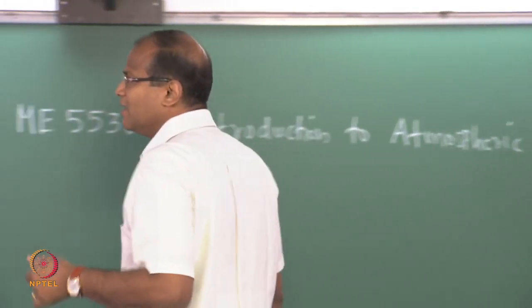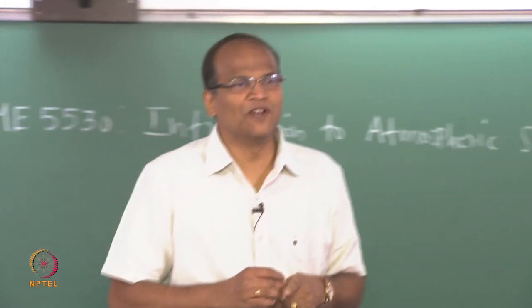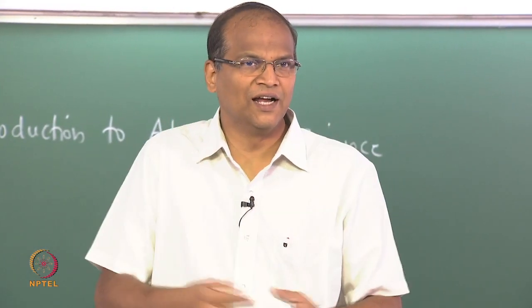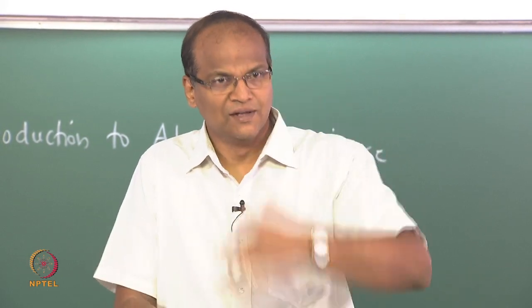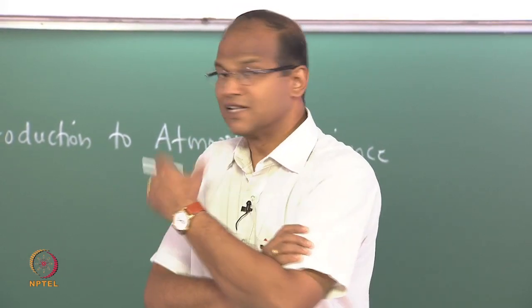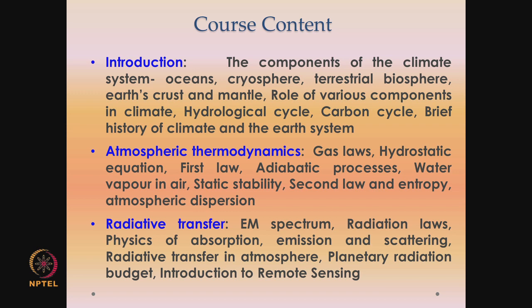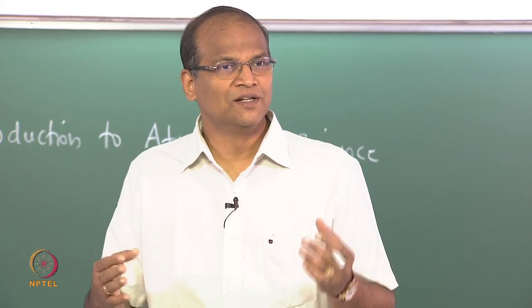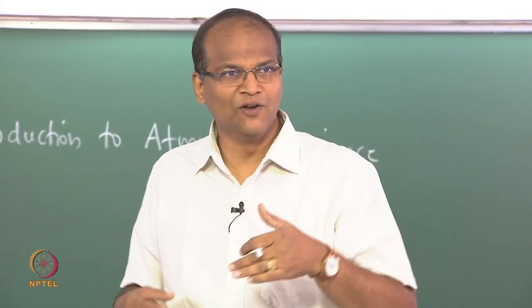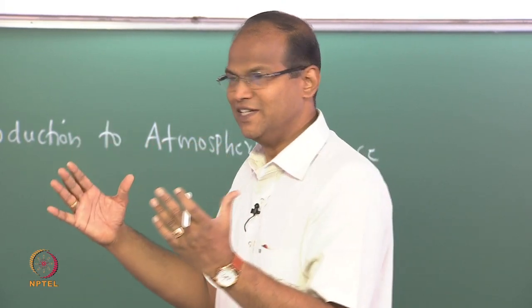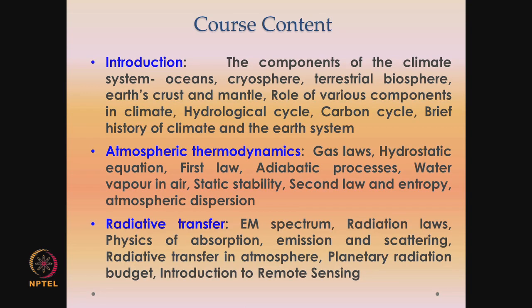Then the cryosphere — the part of the earth system where everything is in the form of ice: Antarctic ice, Arctic ice, and subsurface ice. Then the terrestrial biosphere — vegetation and all this. Vegetation controls evaporation, transpiration, and temperature. For example, when you get into our campus, there is a distinct difference from Sardar Patel Road — there is a 2 degree drop because of the vegetation.